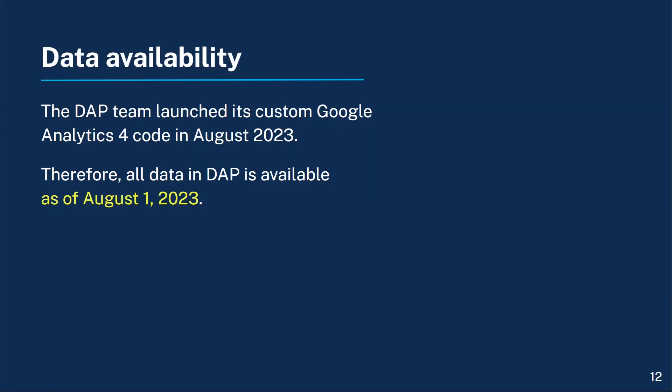The DAP team launched its custom Google Analytics 4 code in August 2023. Therefore, all data in DAP is available as early as August 1st, 2023. However, if your agency is not using centrally-hosted DAP code, which automatically updates all the code, then your DAP GA4 data availability will depend on when your agency implemented the DAP code independently.